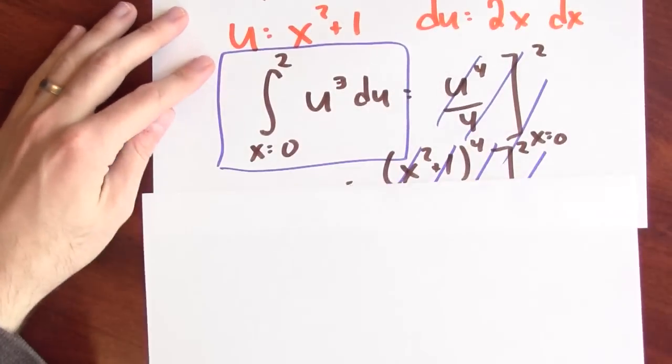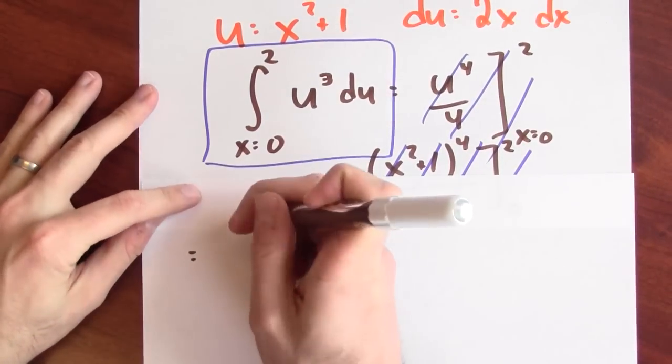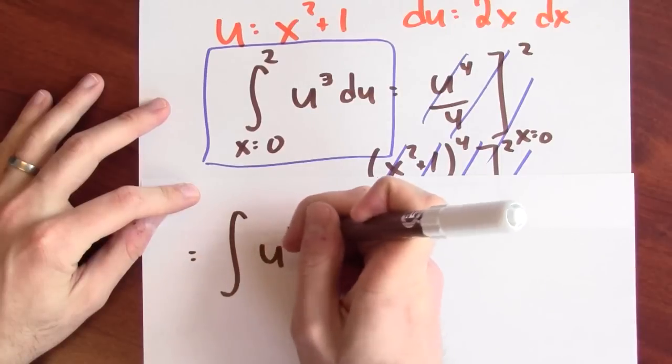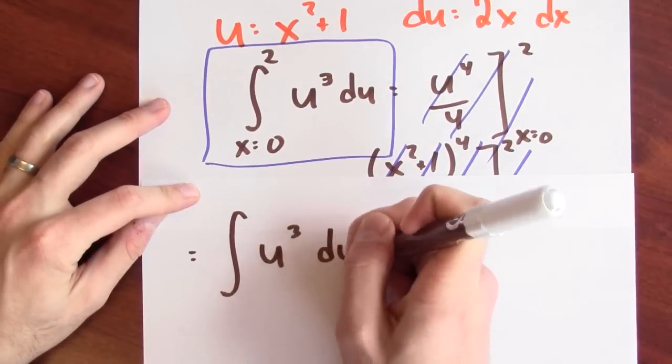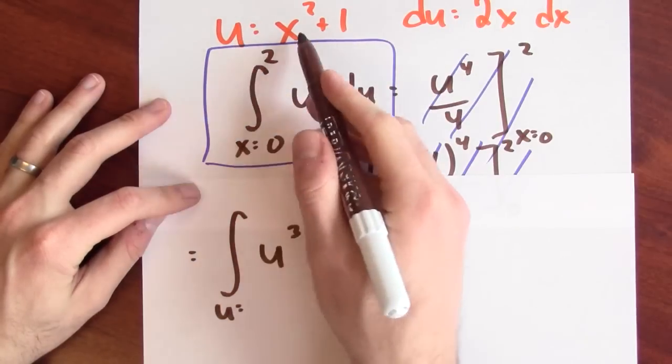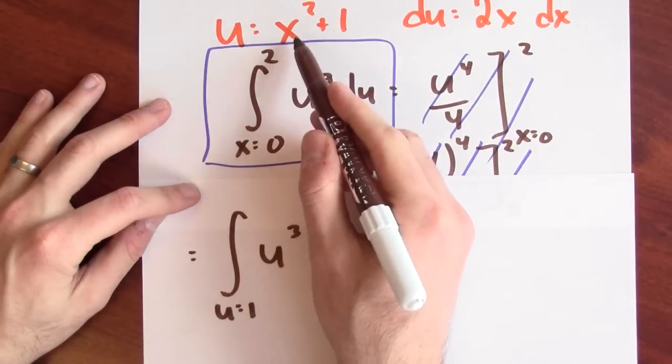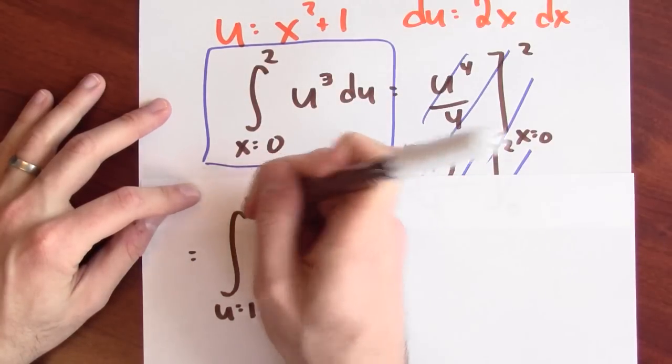Instead, I'll see that that integration problem is the same as the integral of u cubed du, and when x is equal to 0, u is 1. And when x is equal to 2, u is 2 squared plus 1, which is 5.